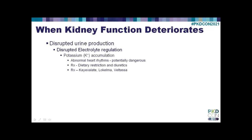As your kidney function deteriorates, not only do you tend to accumulate salt and water, you tend to accumulate other things such as potassium. Potassium, when it accumulates to high levels, can cause abnormal heart rhythms, which are potentially dangerous. We treat that by asking you to restrict dietary potassium. Diuretics, which encourage salt and water excretion, will also tend to cause potassium excretion in your urine. If that's insufficient, we will sometimes give medications that will bind potassium in your intestines, such as K-exalate, Lokelma, and Veltassa. These buy time and can help control potassium.